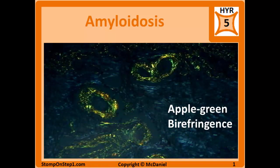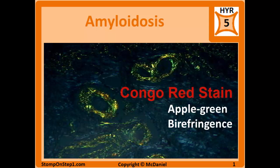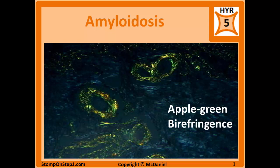Something else you're going to see pop up in questions pretty frequently is apple green birefringence. That's because when you take a biopsy specimen of a tissue with amyloidosis aggregates, stain it with Congo red stain, and place it under a polarized light, you get a characteristic picture. That's pretty much the main way to diagnose amyloidosis — this staining technique.